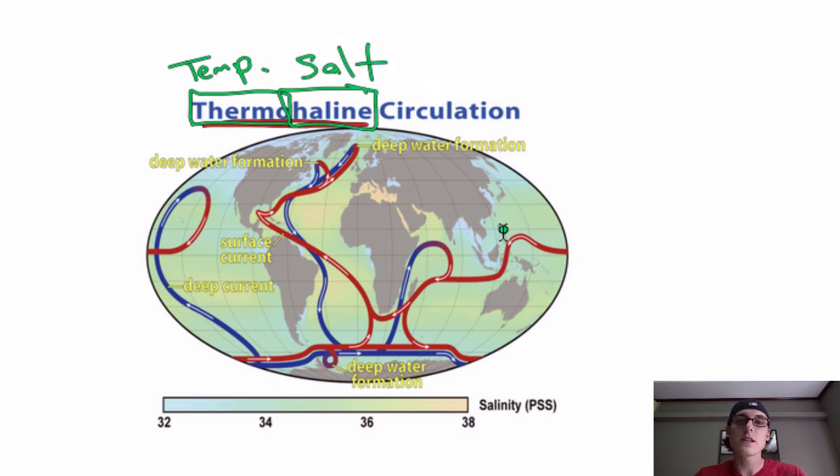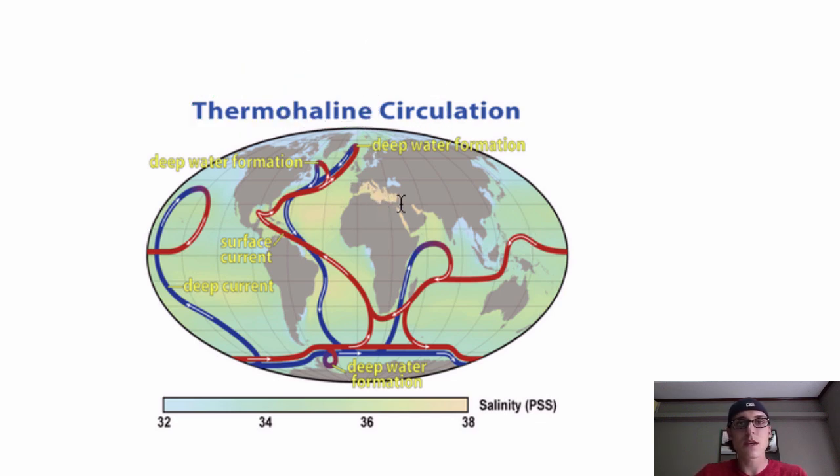The reason that it's called the thermohaline circulation or the temperature salt circulation is simply because the ocean water is driven on the surface by wind but driven through the depths of the ocean by the temperature and salinity.